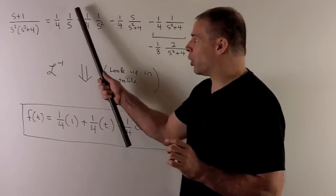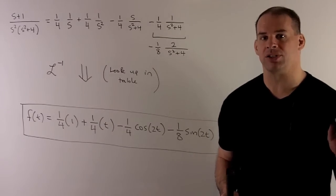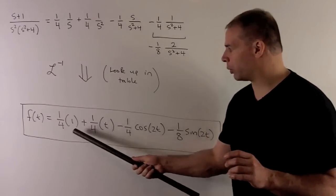So, if I take a look, if I have 1 over s, that's going to come from 1. So, the Laplace transform of 1 is equal to 1 over s. So, we put a 1 in.